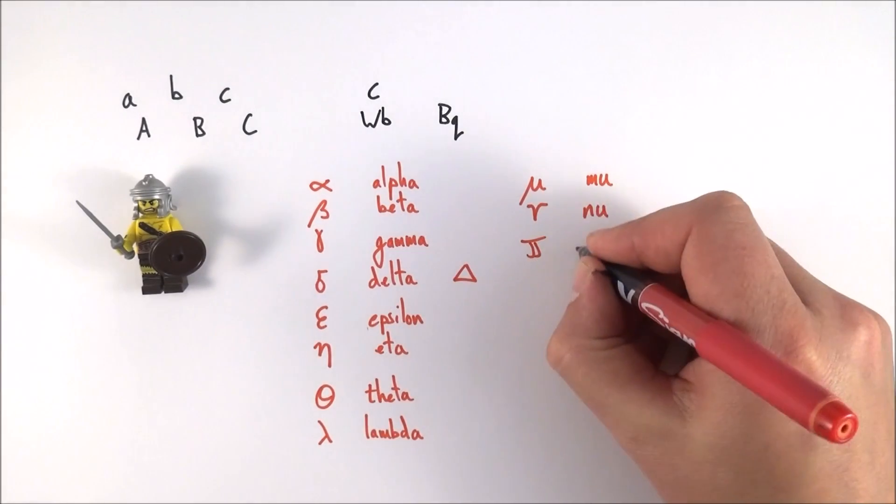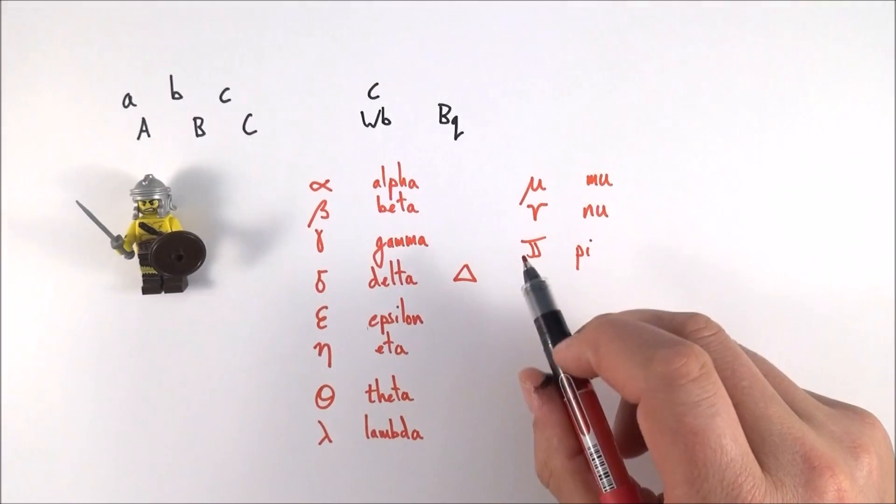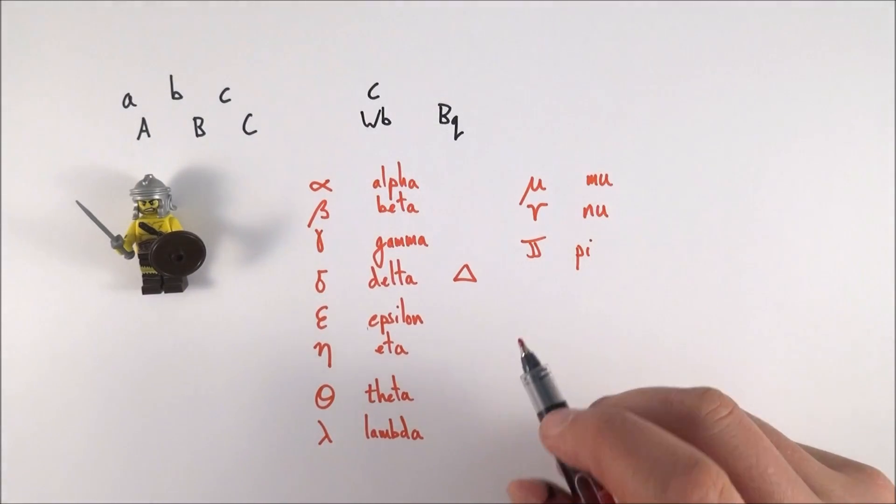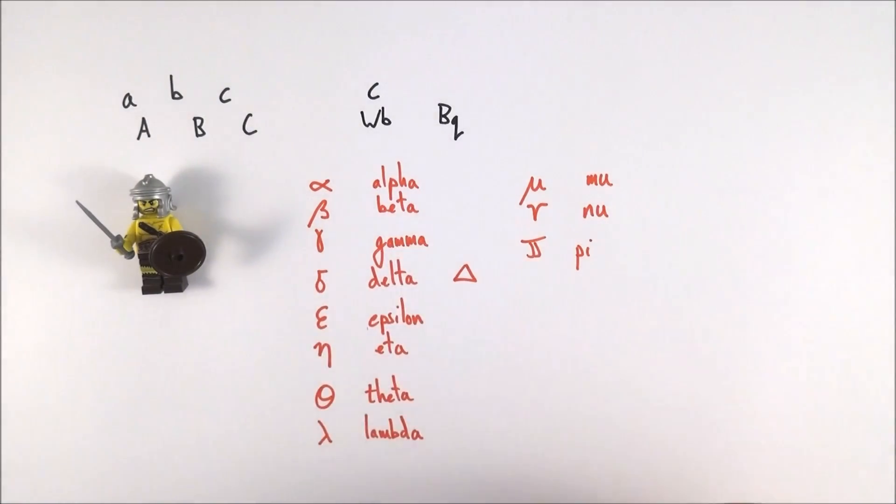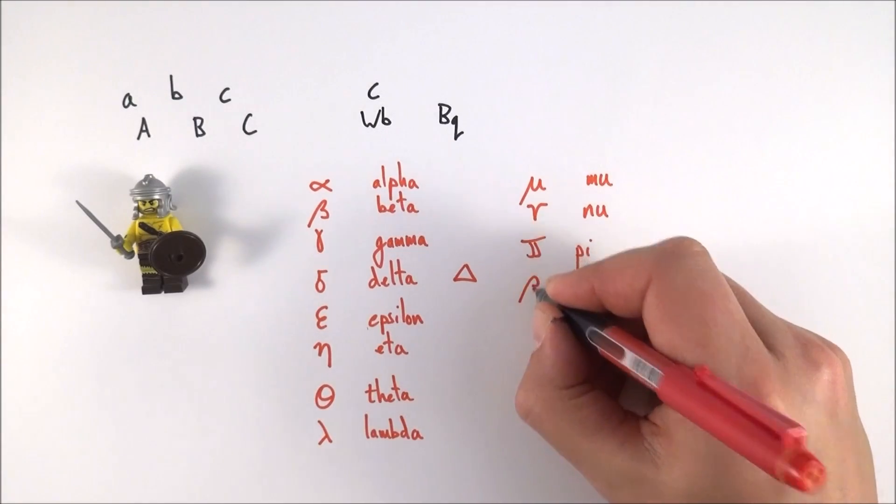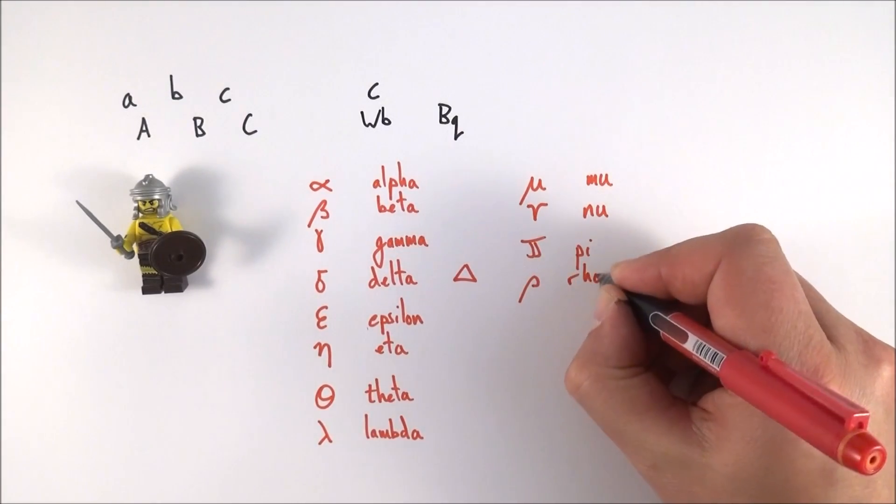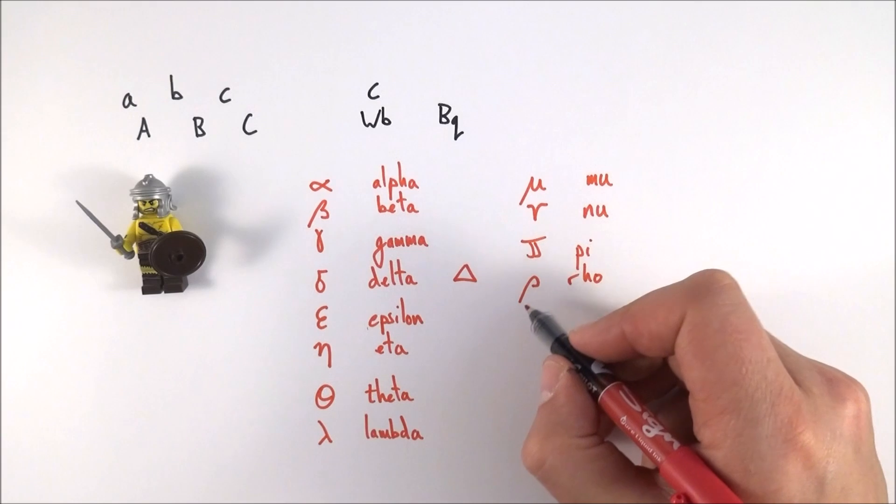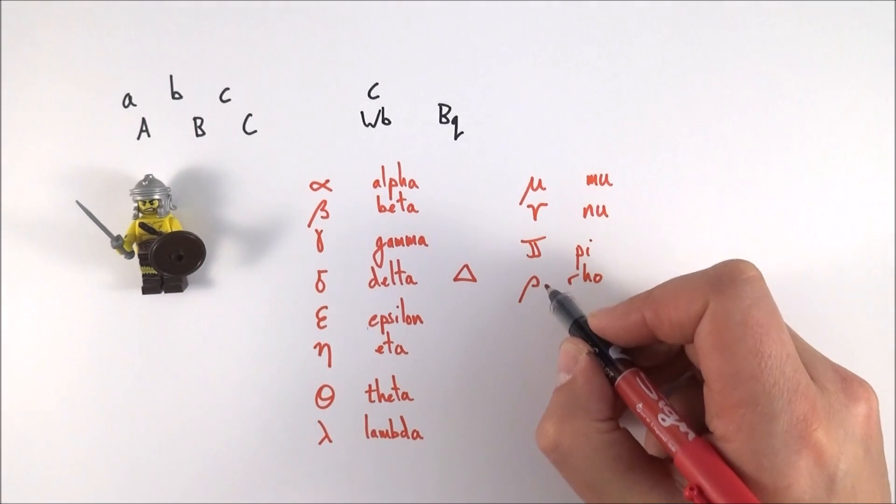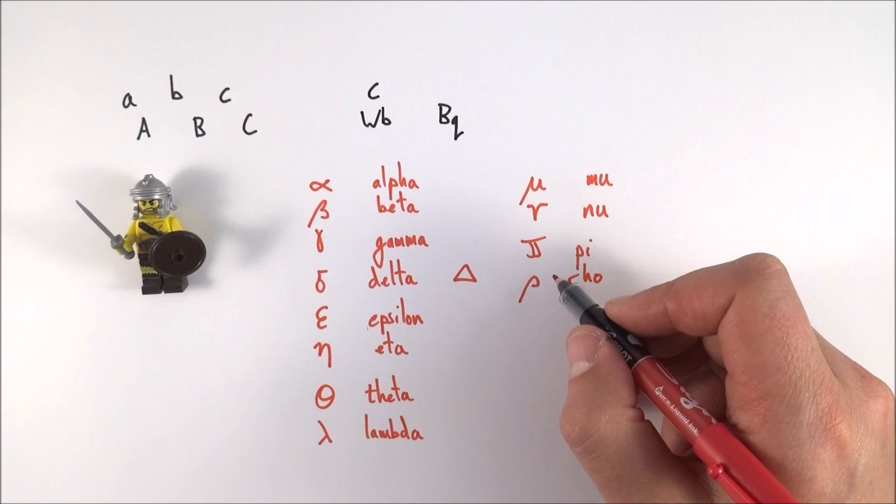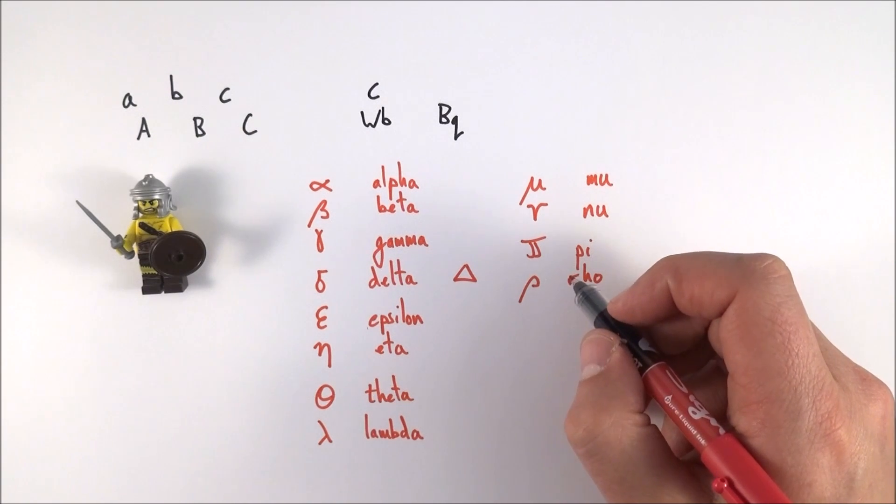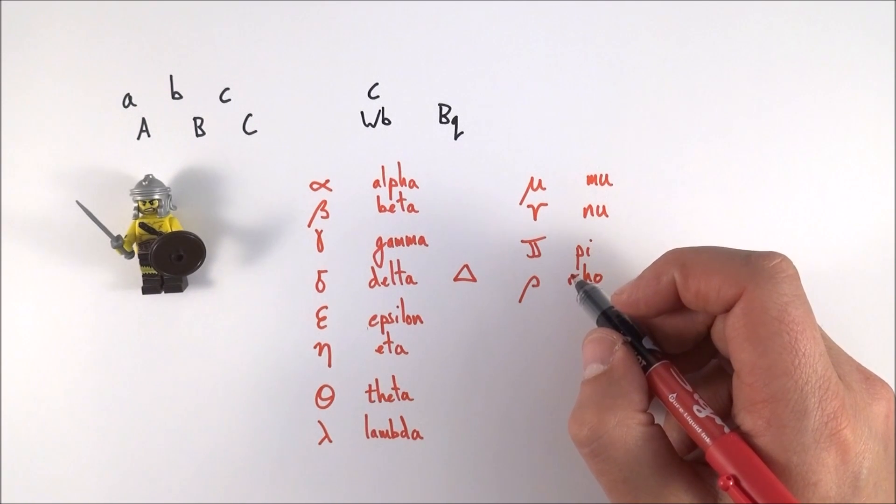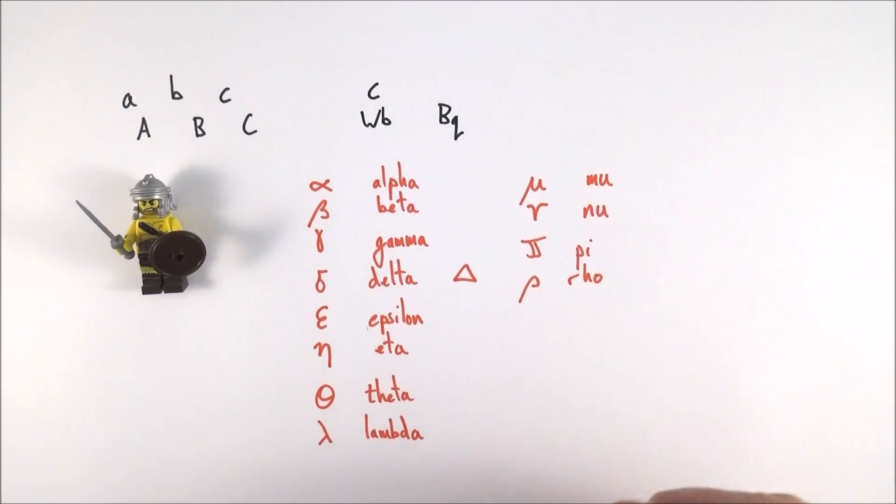After this we've got the letter pi. Again, you should be familiar with this. Often we're talking about things like pi radians, for example, so pi comes up all the time. And there's another letter which is rho. Rho is a curly slanted p, and this can be used for things like density, which is given the symbol rho, but it's also used for things like resistivity, which is something you're going to come on to in year 12.